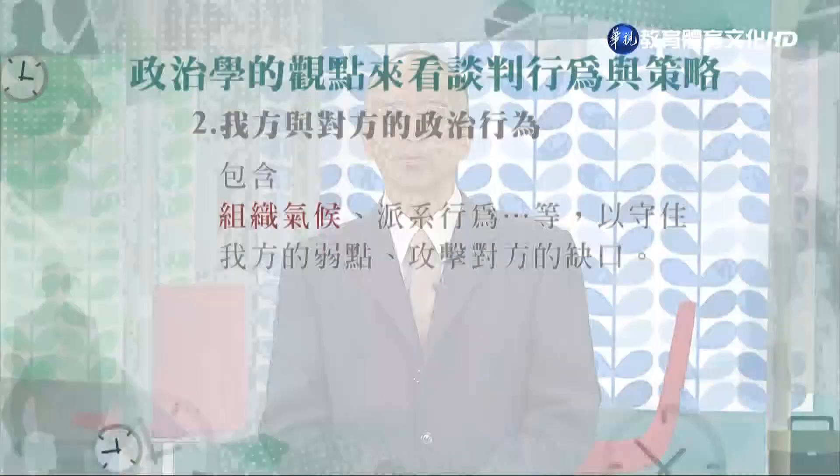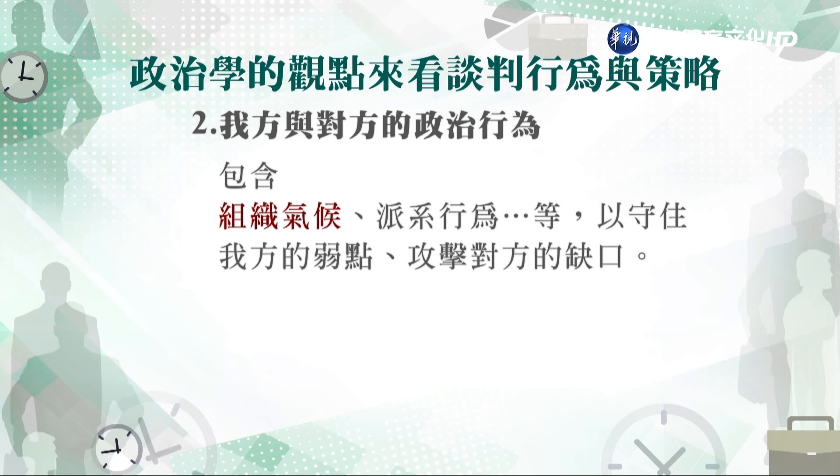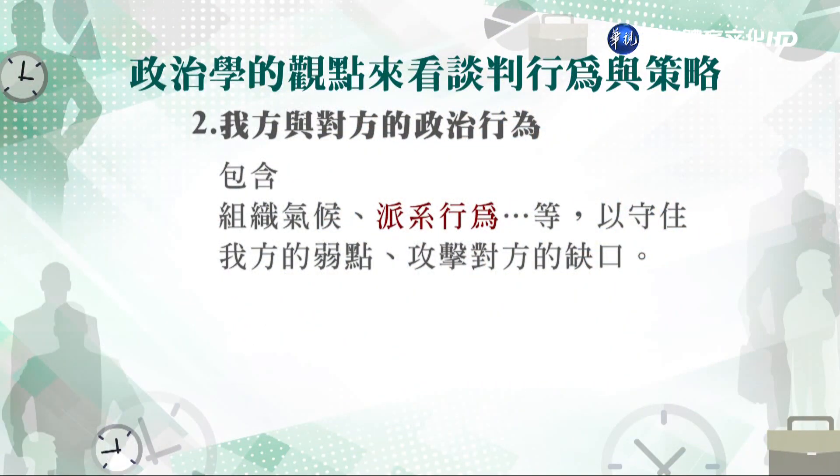第二點，我們要探討我方跟對方的政治行為，這個面向非常廣。跟商學管理比較有關係的，比如說組織的氣候——我們用天氣的角度來看，目前公司內部是晴天（相安無事）、雨天（有些狀況）還是暴風雨（內部權力正在進行重組或更換）。我們要去了解我方和談判對手各自的組織氣候。